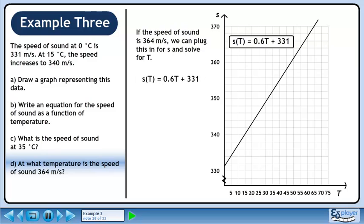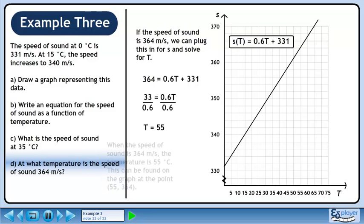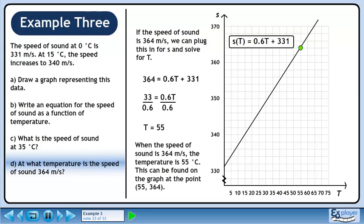Rewrite the function. Replace the left side with 364. Subtract 331 from both sides to get 33 equals 0.6t. Divide both sides by 0.6 to isolate t. This gives us t equals 55. When the speed of sound is 364 meters per second, the temperature is 55 degrees Celsius. This can be found on the graph at the point (55, 364).